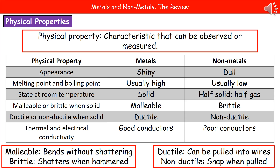Metals are ductile, which means they can be pulled and therefore be used to make wires and so forth, whereas non-metals are non-ductile, which means they're going to snap if you try and pull them too far. Finally, the thermal and electrical conductivity: metals tend to be good conductors, both of heat and of electricity, whereas non-metals tend to be poor conductors of both.